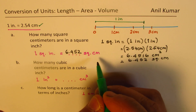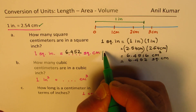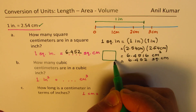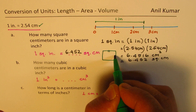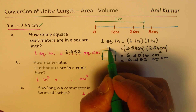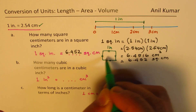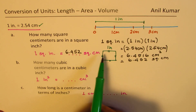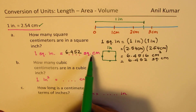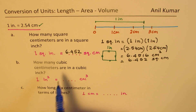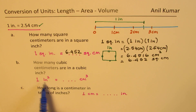That means if we have a square whose dimensions are one inch by one inch, it will be 6.452 square centimeters. Now let's do Part B: how many cubic centimeters are in one cubic inch?